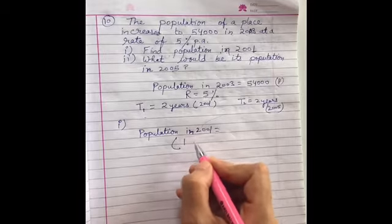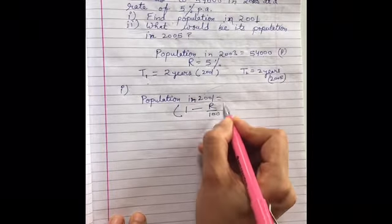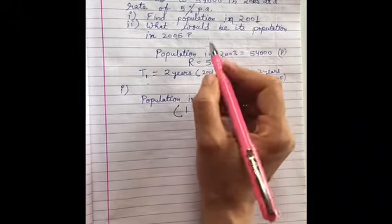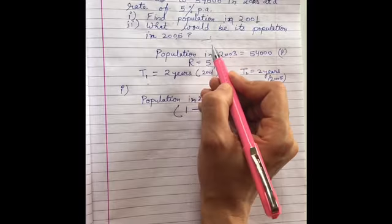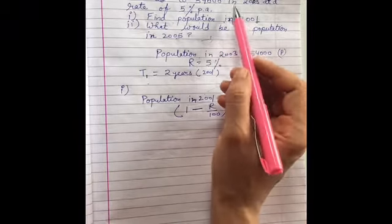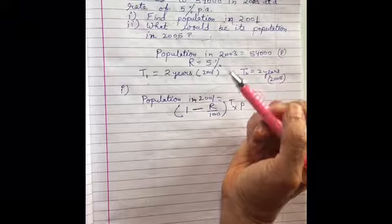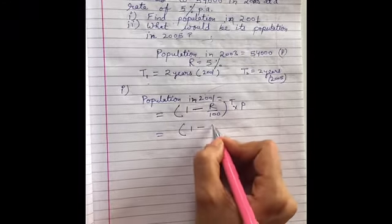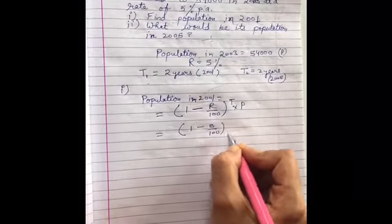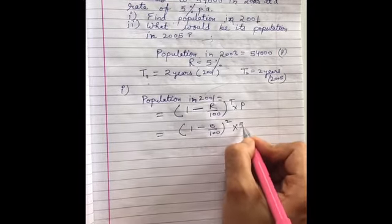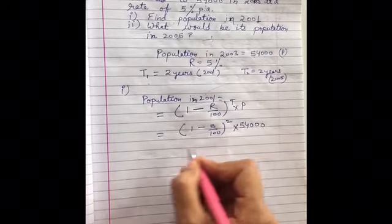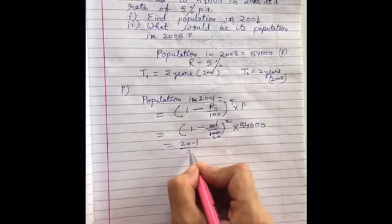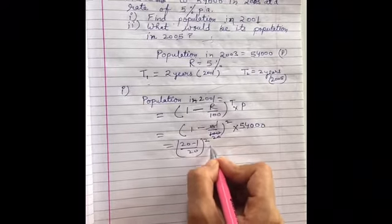The formula will be (1 - r/100) raised to power t multiplied by P. We've assumed that the population is increasing year by year, so now it is 54,000 in 2003, in 2001 it will be less. So it will be (1 - 5/100) raised to power 2 multiplied by 54,000. Just solve it, 20, so it will be (20 - 1)/20 squared multiplied by 54,000.